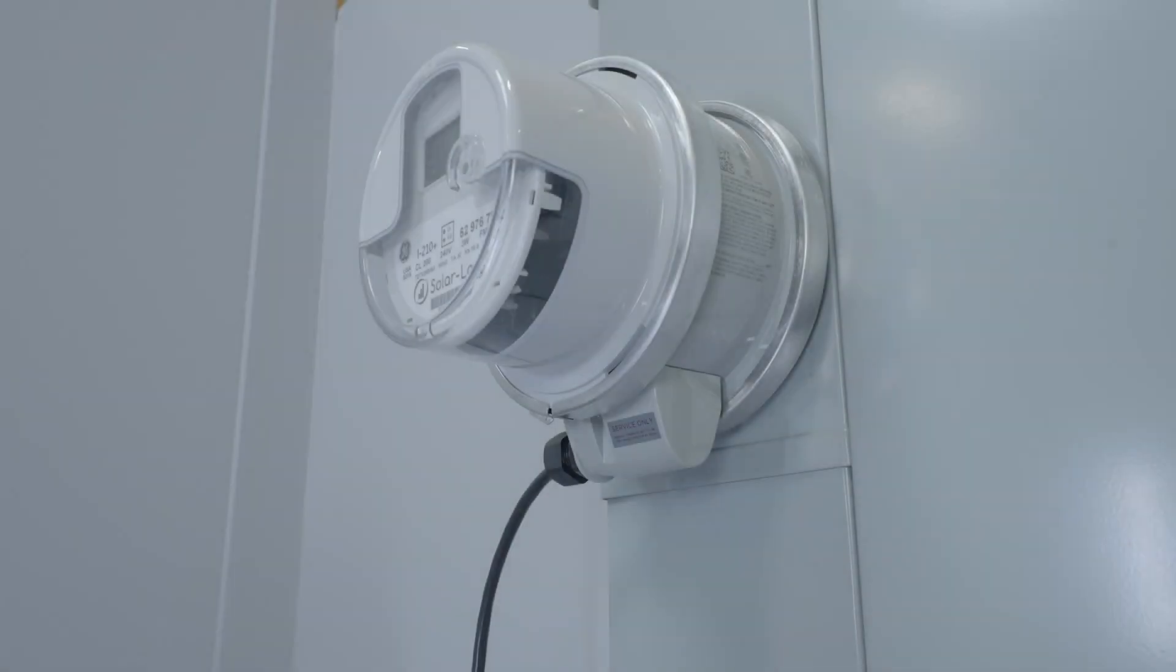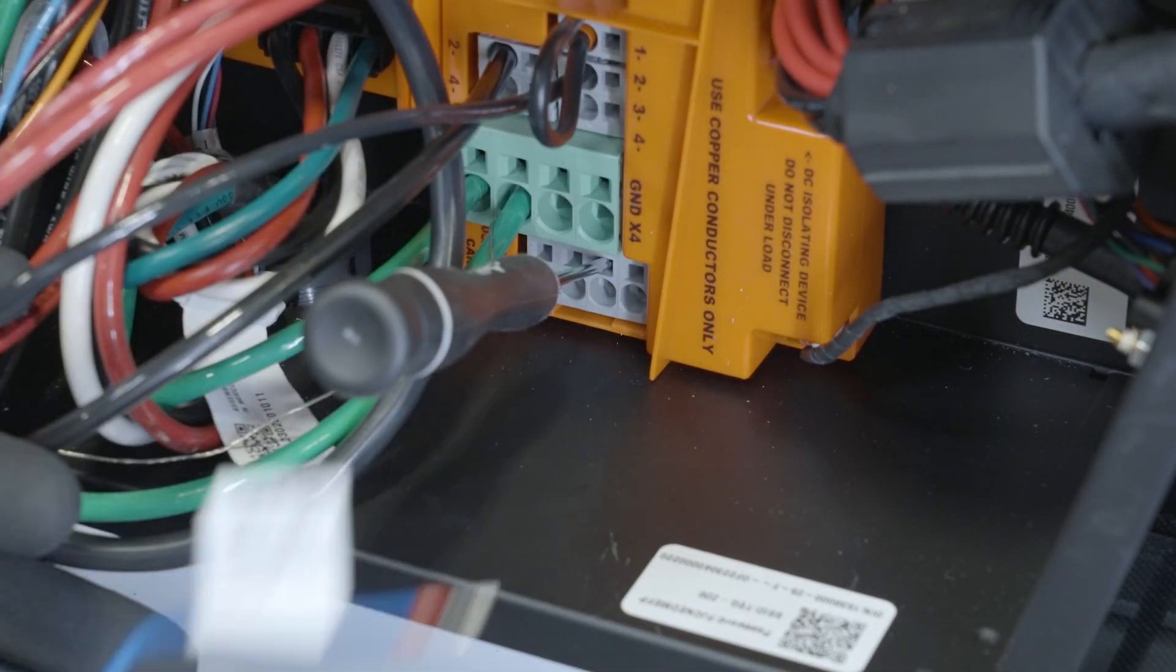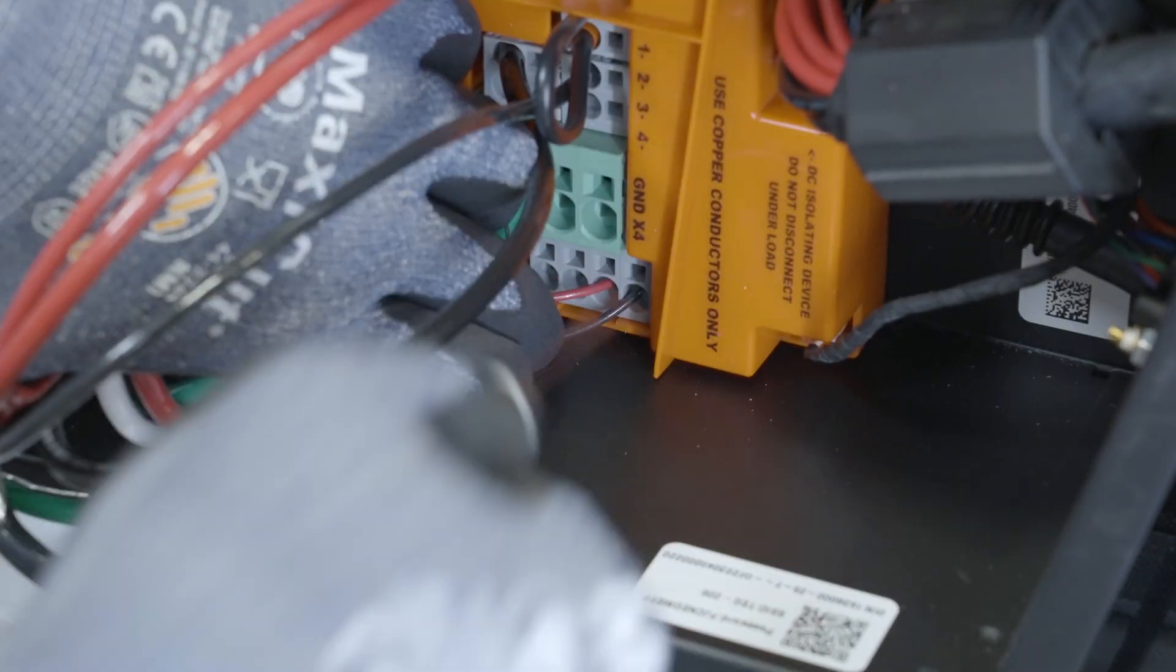When installing Powerwall Plus with backup switch, a system shutdown switch must be wired into the auxiliary connector inside of the controller Powerwall Plus.